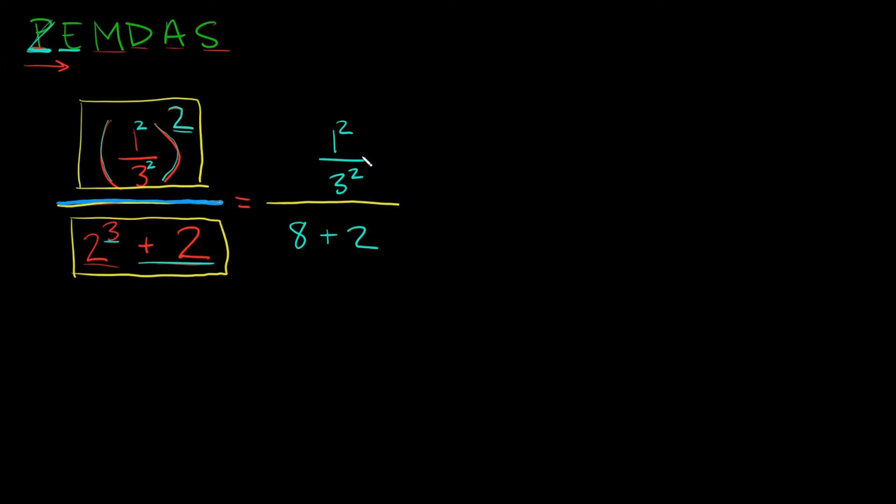So you can see I've simplified the top and the bottom, but I can keep simplifying them. There's still more work to do. So on top we have one squared over three squared. What does that simplify to? Well one squared simplifies to one and then that's going to be over three squared. What's three squared? Nine.